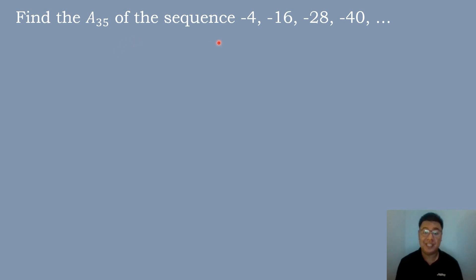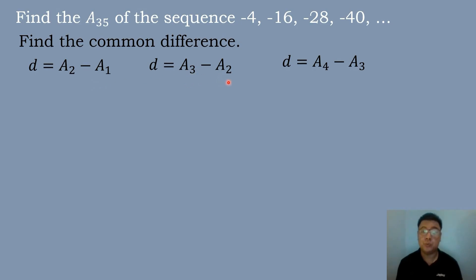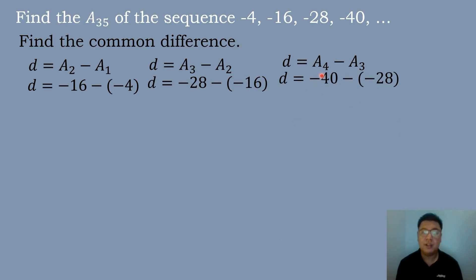So let's now have our last example. Find the 35th term of the sequence negative 4, negative 16, negative 28, and negative 40. The first step is to find the common difference using the formula: a sub 2 minus a sub 1, a sub 3 minus a sub 2, a sub 4 minus a sub 3. Substituting: negative 16 minus negative 4, negative 28 minus negative 16, and negative 40 minus negative 28.